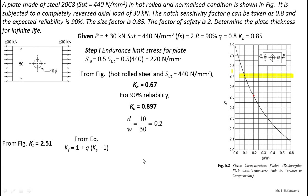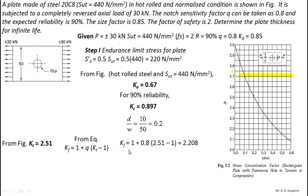From the equation kf = 1 + q(kt − 1), which was derived in the previous video, with kt = 2.51 and notch sensitivity factor q = 0.8: kf = 1 + 0.8 × (2.51 − 1) = 2.208.